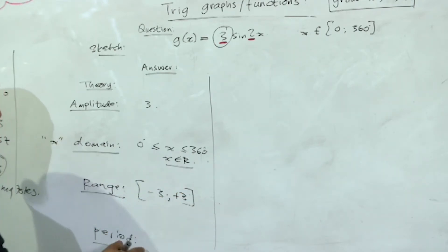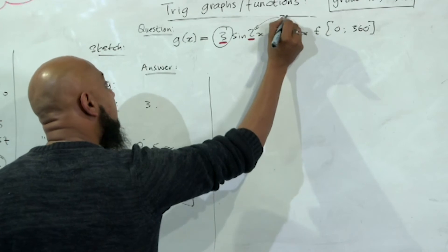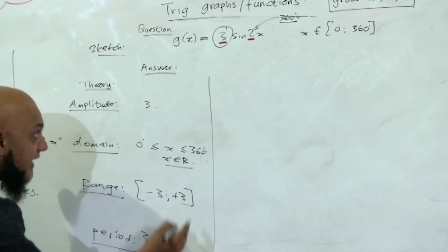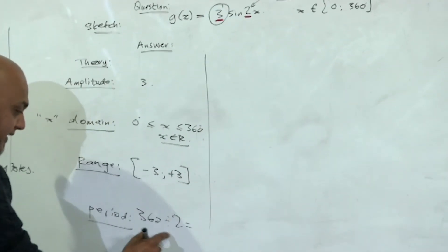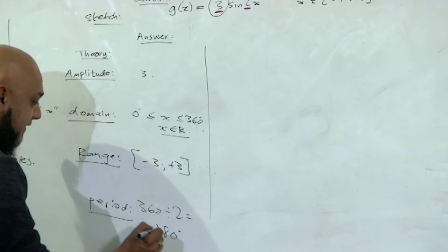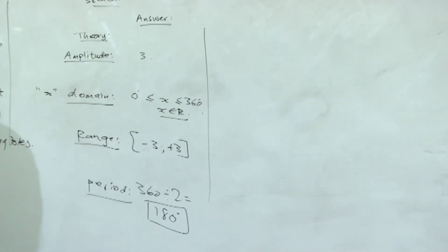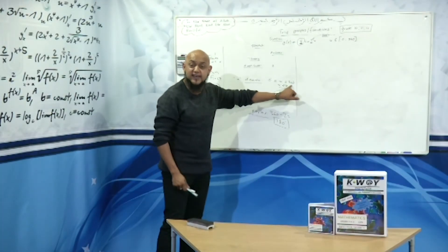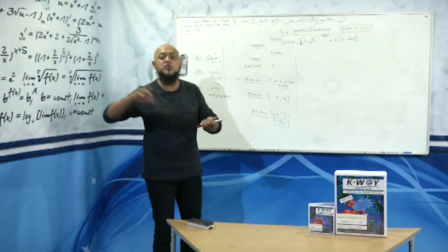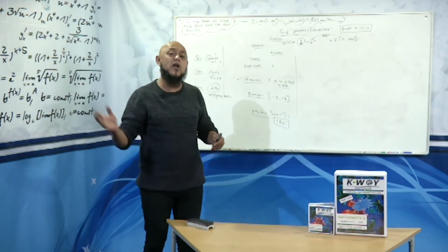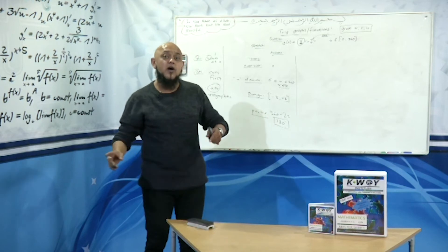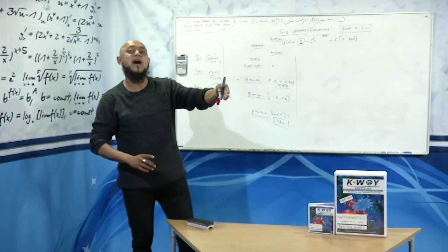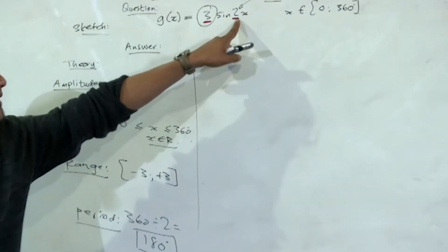And the period of the graph is determined by the formula 360 divided by that number, so 360 divided by - what's the number here? The number has changed. 360 divided by 2 is 180 degrees, and that's the period of the graph. Unlike the previous graph where the period was 360, although the domain says 360, the period of the graph, that means one complete sine cycle, will make its appearance not every 360 degrees but now every 180 degrees. And how did I get the 180 degrees? I said 360 divided by that number in between. So if that number was 3, 360 divided by 3 would be 120 degrees.